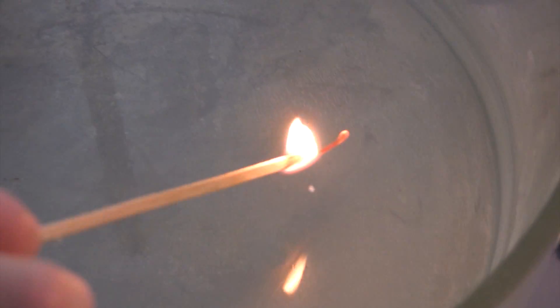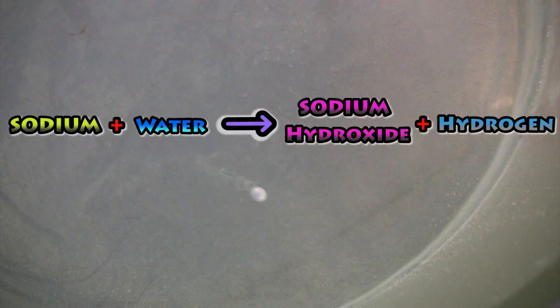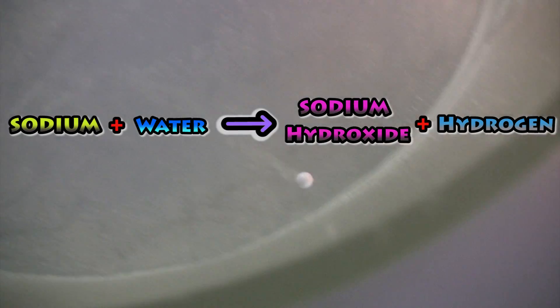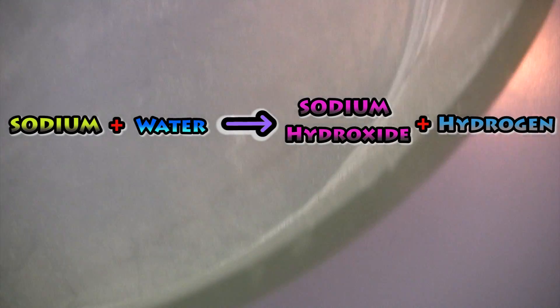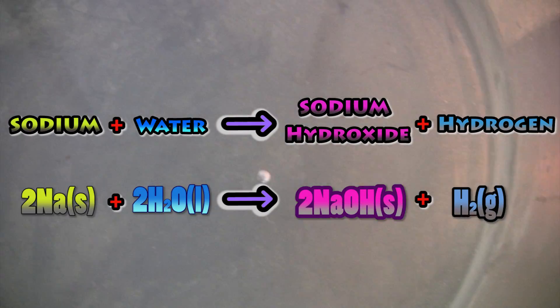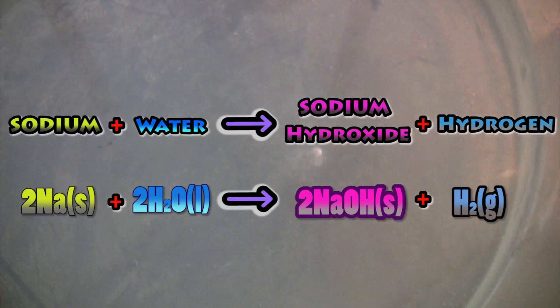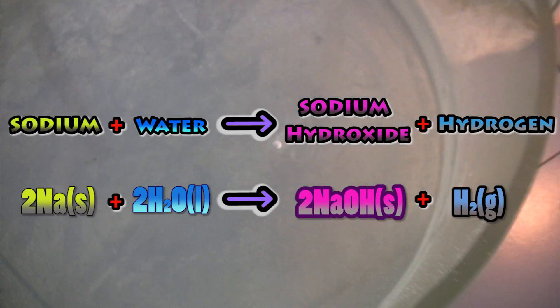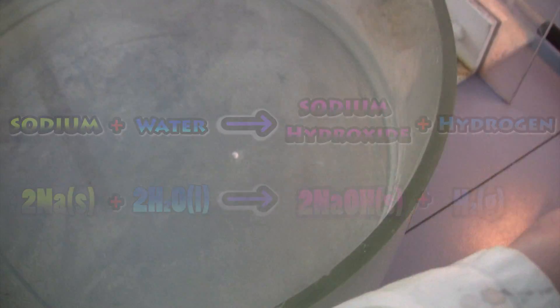Sodium and water react together to produce sodium hydroxide and hydrogen gas. Sodium hydroxide is an alkali - hence the name, alkali metals. See what they've done there? Clever, eh?